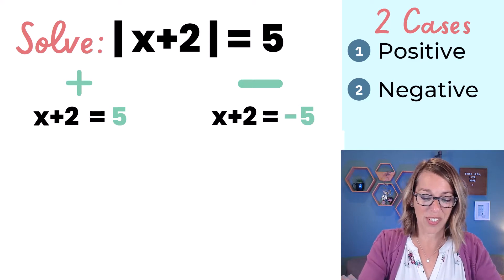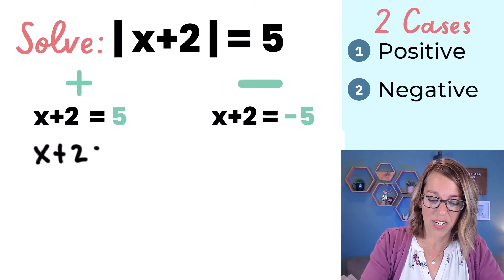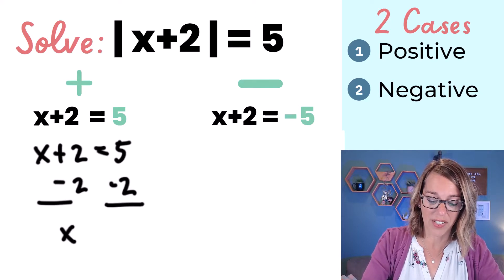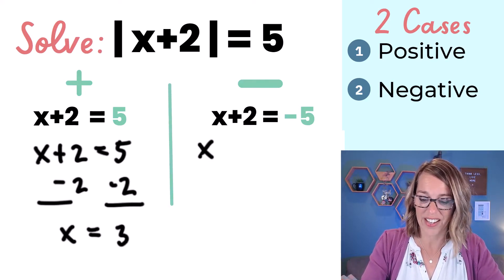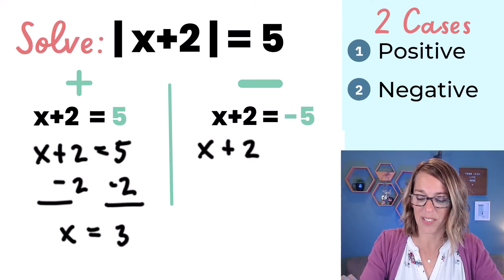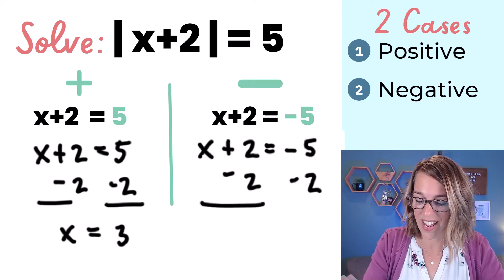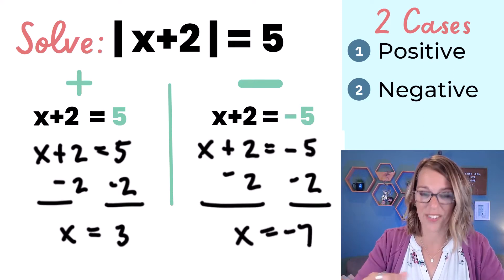I'm going to solve those two cases separately. For the positive case, x plus 2 equals 5. I subtract 2 from both sides and get x equals 3. For the negative case, x plus 2 equals negative 5. I subtract 2 from both sides and get x equals negative 7.